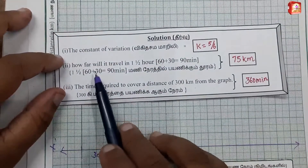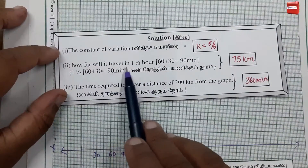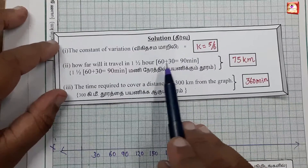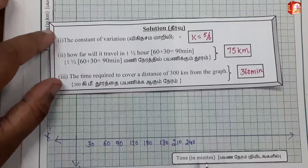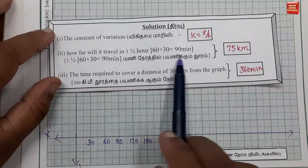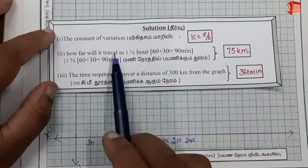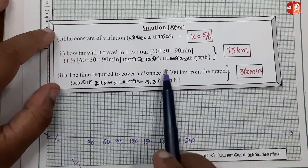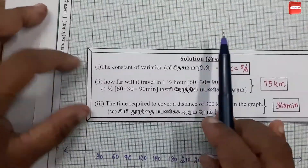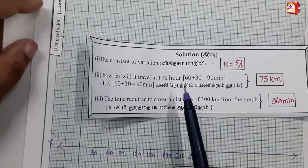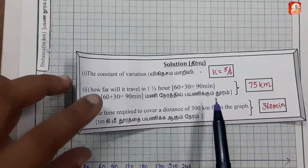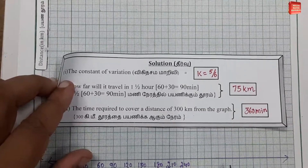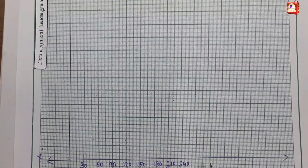First question: how far will it travel in 1.5 hours? We will mark 90 minutes on the X axis and read the corresponding Y axis value. For the third option — time required to cover 300 km — we will mark distance on the Y axis and read the corresponding X value.